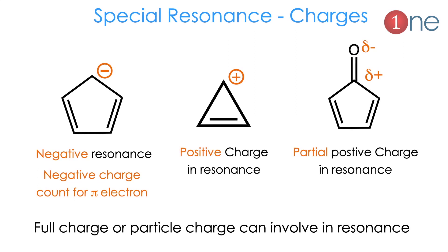You will see special types of resonances. That means anions can also involve in resonance, and cations can also involve in resonance. Similarly, partial charge can also involve in resonance — electromagnetic groups can create a positive charge on atoms. Particularly in a carbonyl group, the carbon possesses delta-plus and oxygen possesses delta-minus. So partial charge can also involve in resonance here. Full charge or partial charge can both involve in resonance.